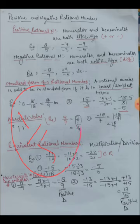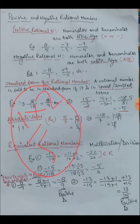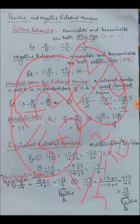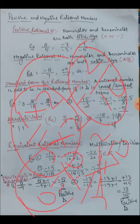For example, if we have one upon five and we need to write two or three equivalent rational numbers: take the number two, then multiply both numerator and denominator by two. Two times one is two, and two times five is ten, giving two upon ten. So two upon ten is equivalent to one upon five. You can verify this by cross multiplication: five times two is ten, and ten times one is ten — both equal, confirming they are equivalent.